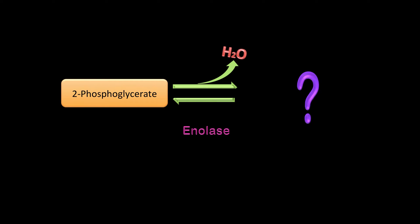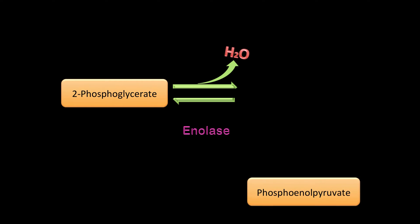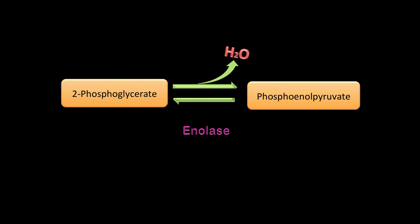Now you are removing water — what type of reaction is that? That's correct: enolase catalyzes a dehydration reaction, and it's converting 2-phosphoglycerate to phosphoenolpyruvate, better known as PEP.